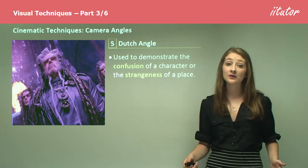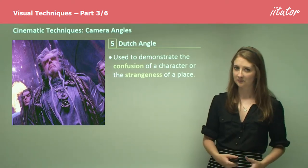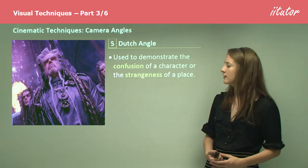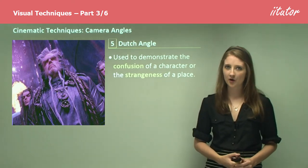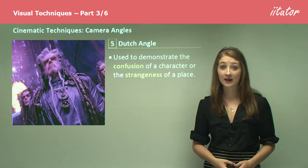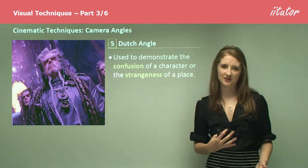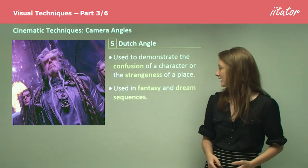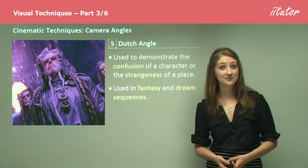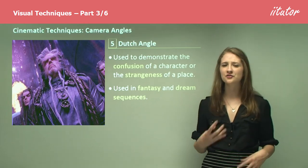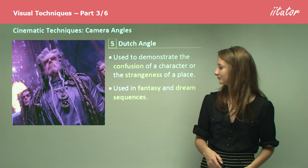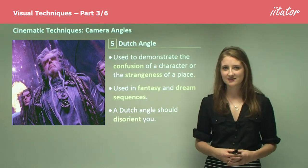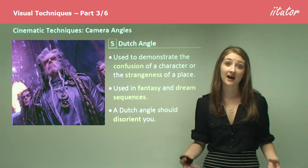The final camera angle is the Dutch angle, used to demonstrate confusion of a character or the strangeness of a place. You'll often see this in fantasy films or science fiction where the world isn't entirely real. It's used in fantasy settings and dream sequences to give a sense of disorientation — making it clear that this isn't real, that it's a fantasy sequence.